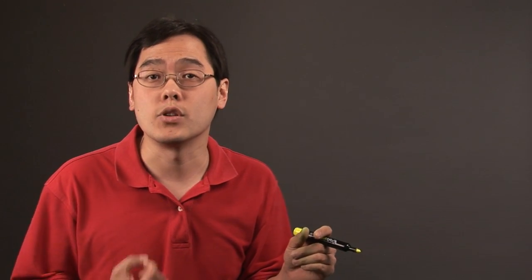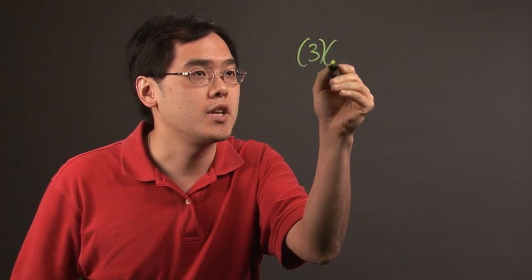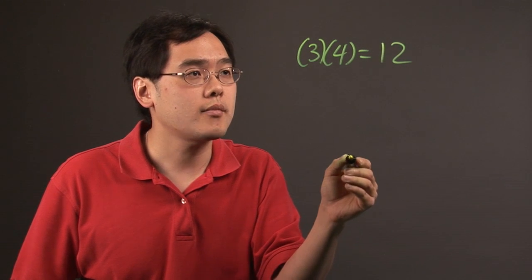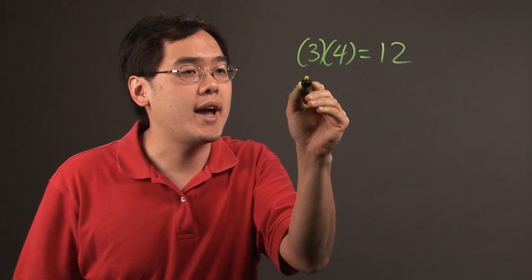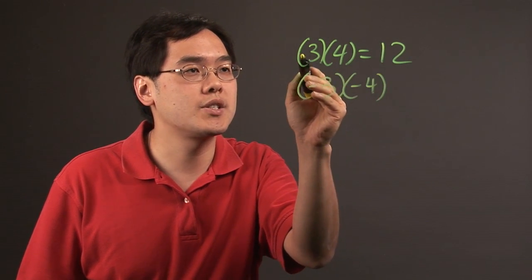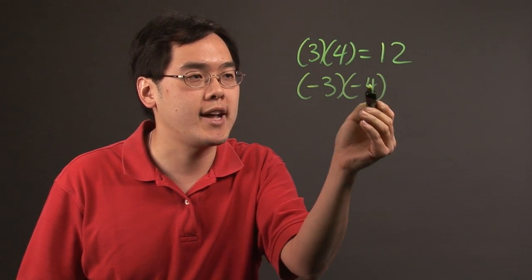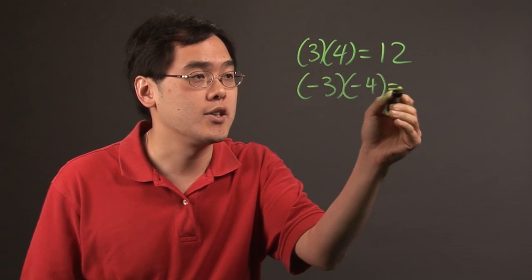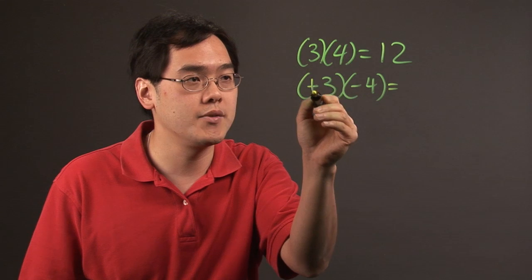The first thing to consider is if the two numbers' signs are the same when you multiply or divide them, it's going to be positive. If you have positive 3 times positive 4, that's going to be positive 12. Now if you have negative 3 times negative 4, notice the signs match. When you multiply two numbers that have the same sign, it's going to be positive — so negative times negative gives you a positive.